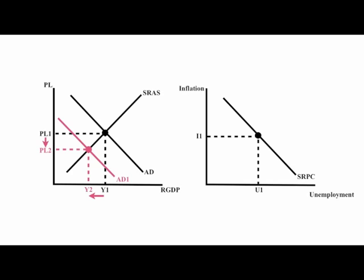When we go through contractionary fiscal and/or monetary policies, the aggregate demand curve shifts to the left, bringing price levels and GDP down, bringing inflation down and unemployment up.